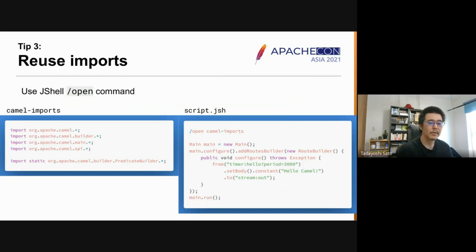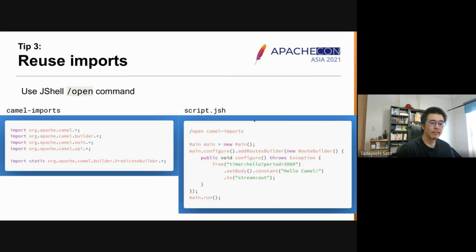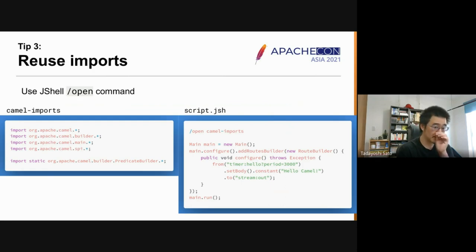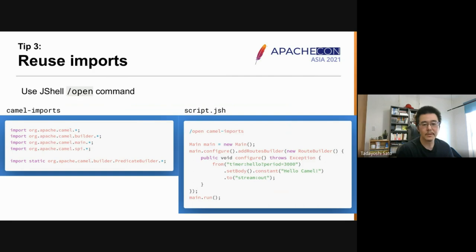Create a file named `camel-imports` and put the set of Camel imports you want to reuse. When you write a script, you can load this imports file into the script using the `/open` command. This way, not only can you reuse the Camel imports, but you also make your script more concise. Note that this tip is only available for JShell scripting.